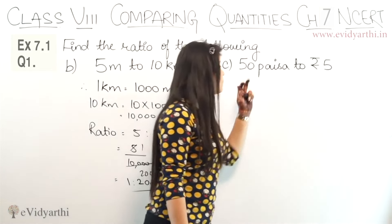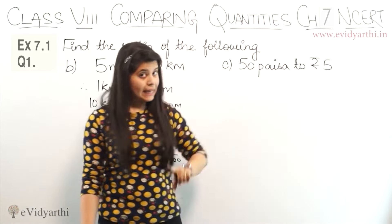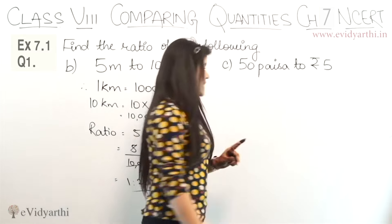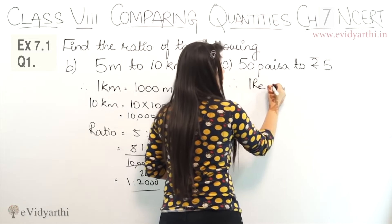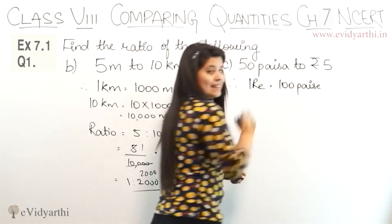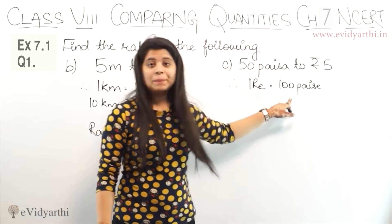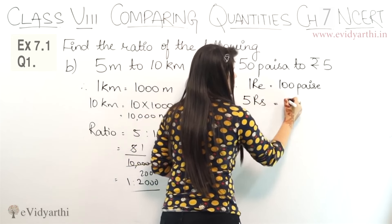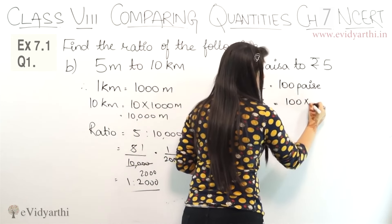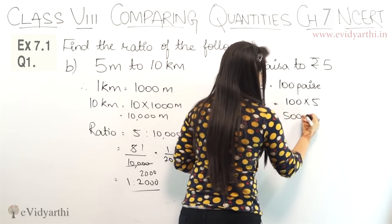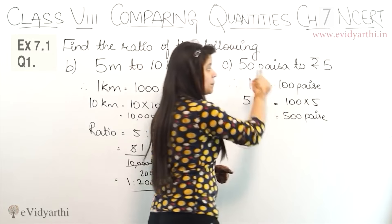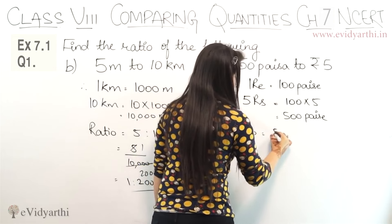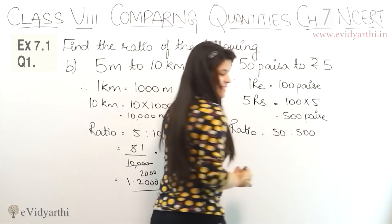Now moving to part C: 50 paisa to 5 rupees. Here the quantities are different — one is in paise and one is in rupees. We need to convert them to the same unit. We know 1 rupee equals 100 paisa. Instead of converting 50 paisa to rupees, we convert 5 rupees to paisa: 5 rupees equals 100 into 5, which is 500 paisa. Now both quantities are in paisa, so the ratio is 50 to 500.